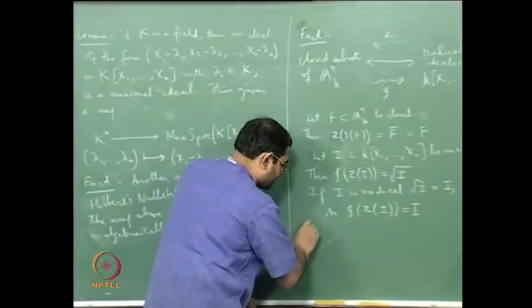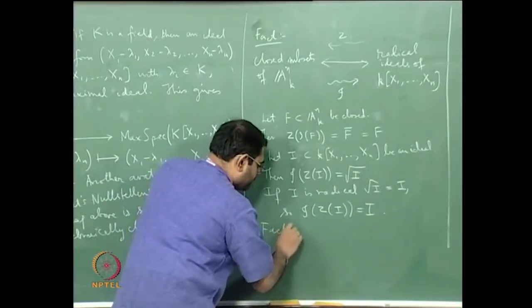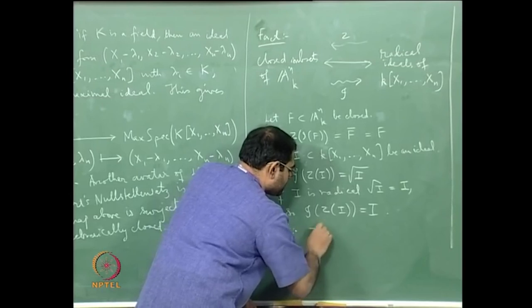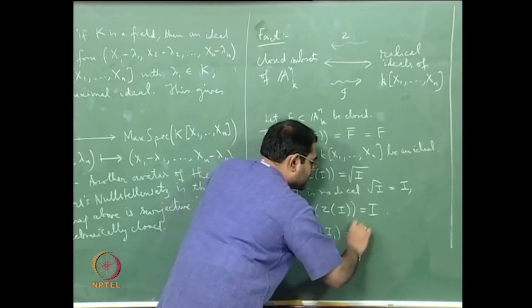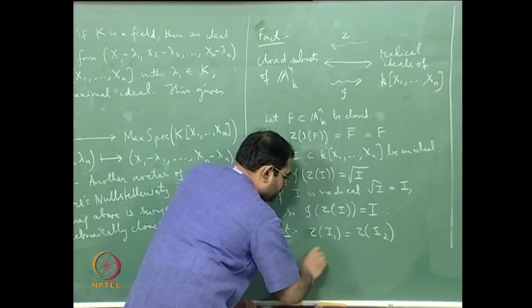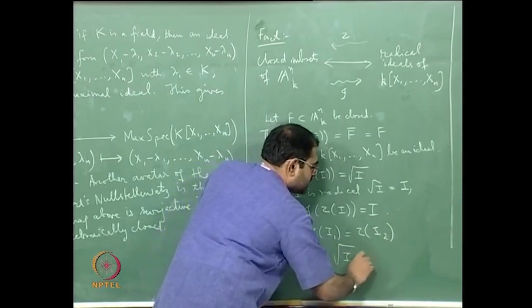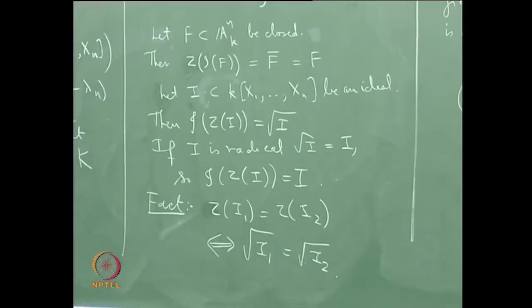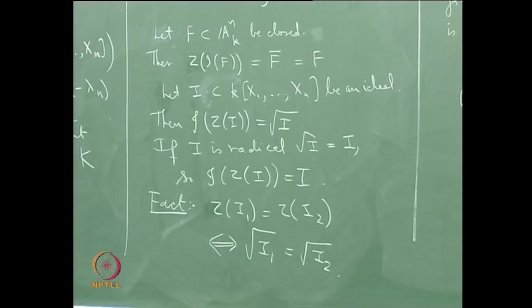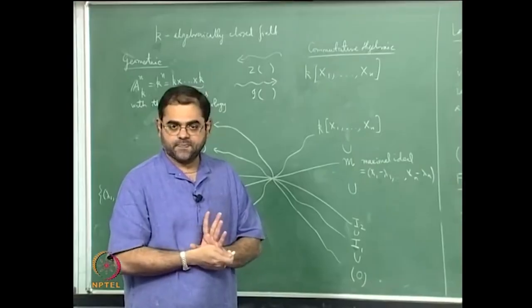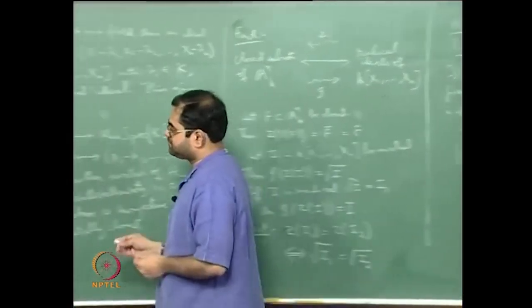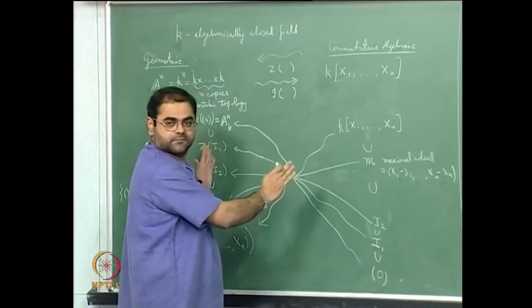Here is one more fact you can try as an exercise: Z(I1) equals Z(I2) if and only if the radical of I1 equals the radical of I2. Two ideals will have the same locus of zeros if and only if their radicals coincide. That clarifies the bijective correspondence.